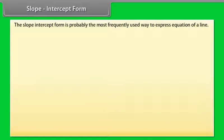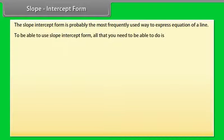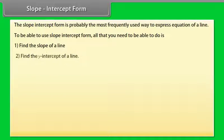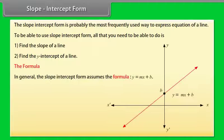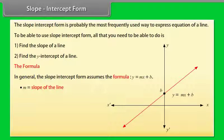Slope-intercept form. The slope-intercept form is probably the most frequently used way to express the equation of a line. To use slope-intercept form, you need to find the slope of a line and the y-intercept of a line. In general, the slope-intercept form assumes the formula y = mx + b, where m is the slope of the line and b is the y-intercept.